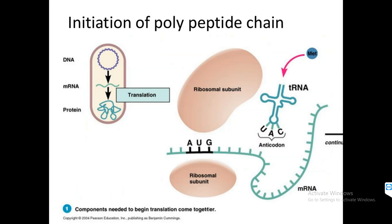Now, the initiation of the polypeptide chain: this is the central dogma — DNA is converted to mRNA by transcription, and now the mRNA is converted to its decoded form, protein, by translation. There are two ribosomal units, a larger and a smaller one. The ribosome binds to the mRNA at the 5' end and recognizes the initiation codon, which is AUG, present on the mRNA.